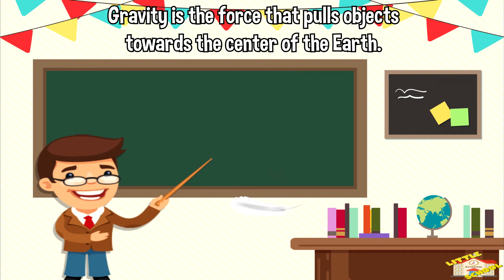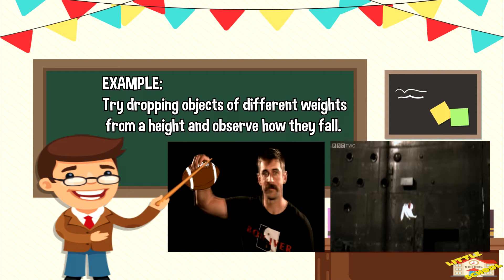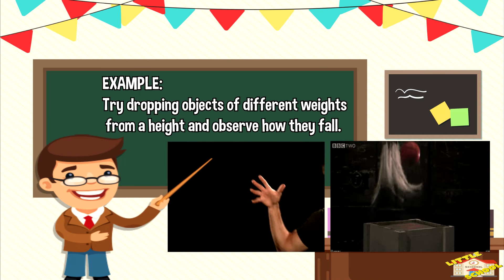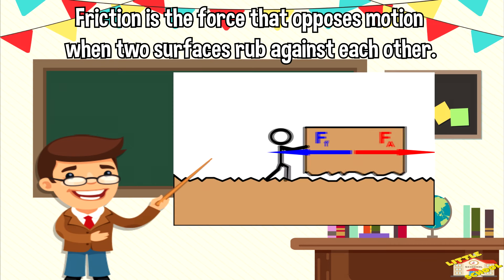What is gravity? Gravity is the force that pulls objects towards the center of the earth. Here's a great example: try dropping objects of different weights from a height and observe how they fall.